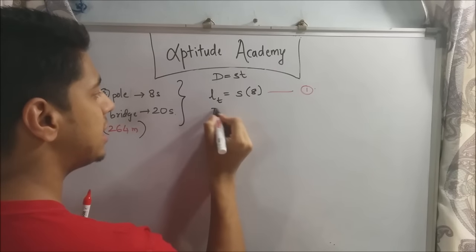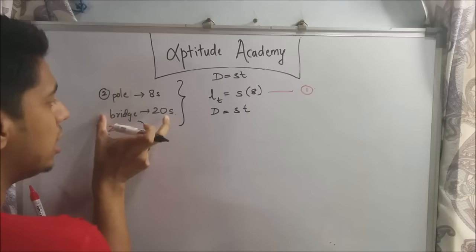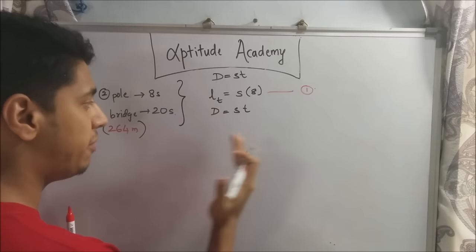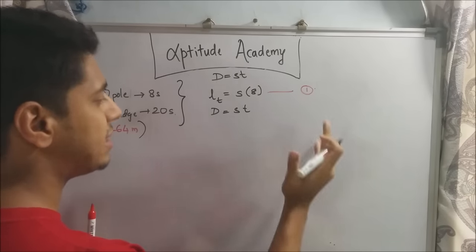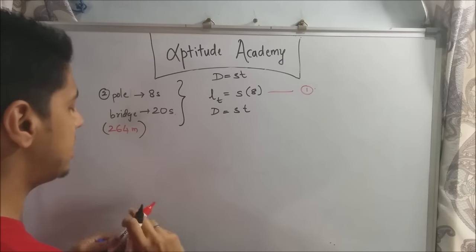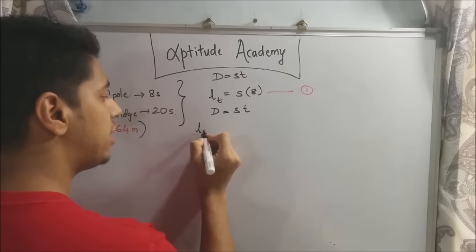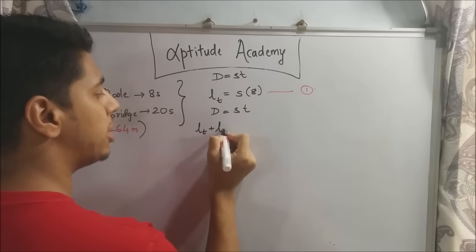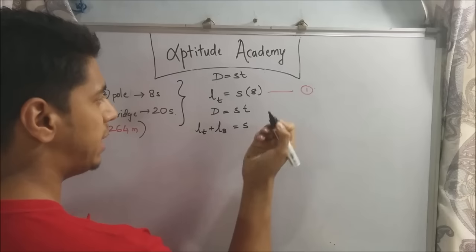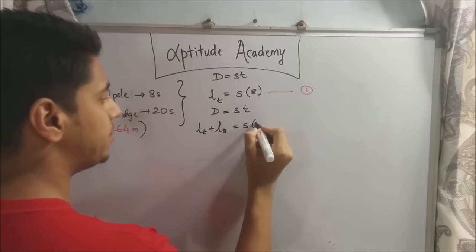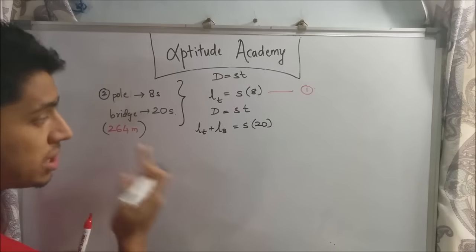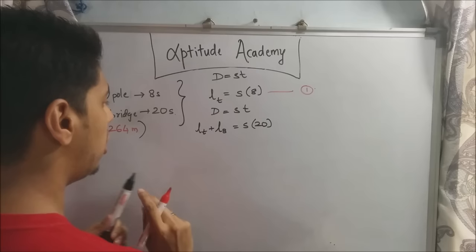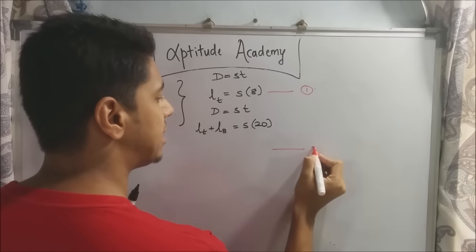Similarly, d equals st you will apply to this scenario. Now here it is crossing a bridge. You know from the first lecture that when it crosses a bridge, it will traverse its own length as well as the length of the bridge. So your distance will now be length of the train plus length of the bridge equals speed times time, and the time here is given as 20. But we know that length of the bridge is 264 meters. So now this will be the second equation.